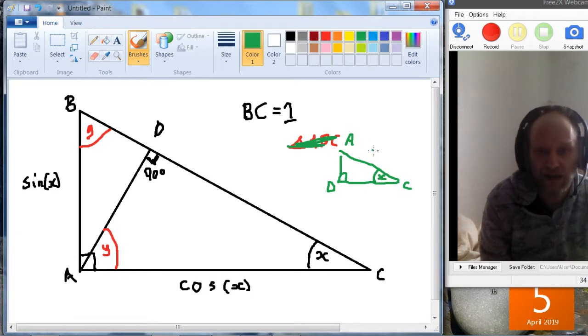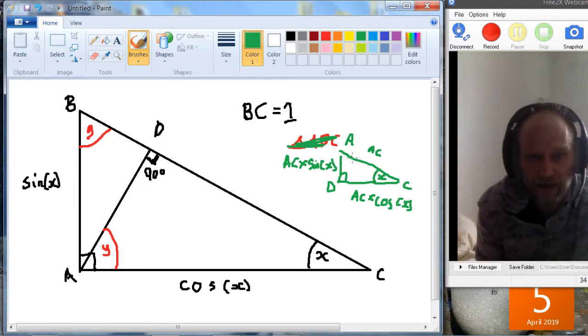So we can say that if we know the length AC, then DC is going to be AC times cos X, and AD is going to be AC times sine X. Okay, so that's what we're going to do, and we know the length AC is cos X.